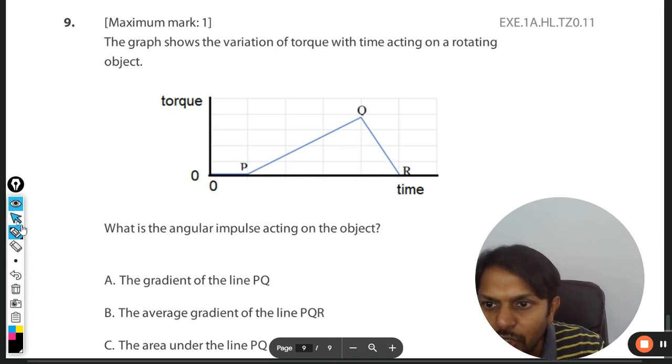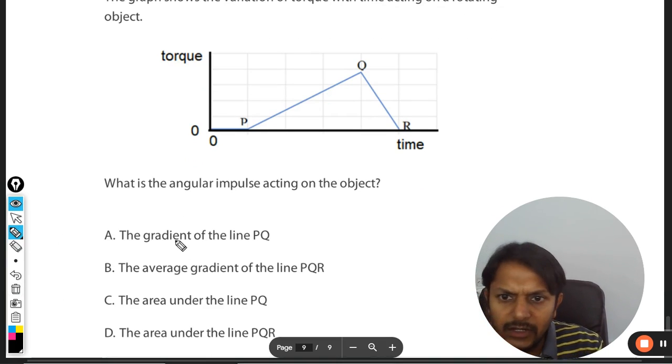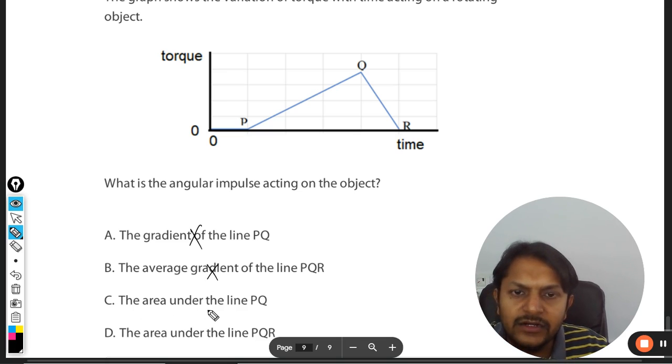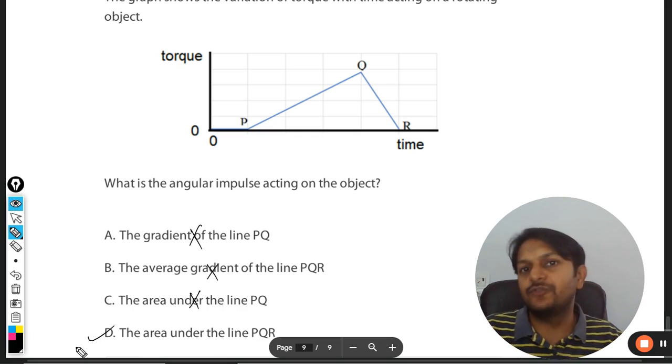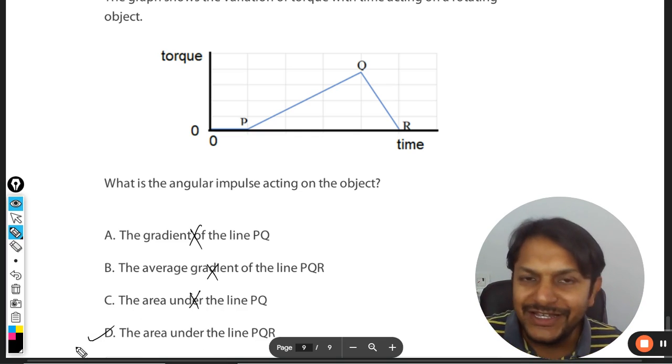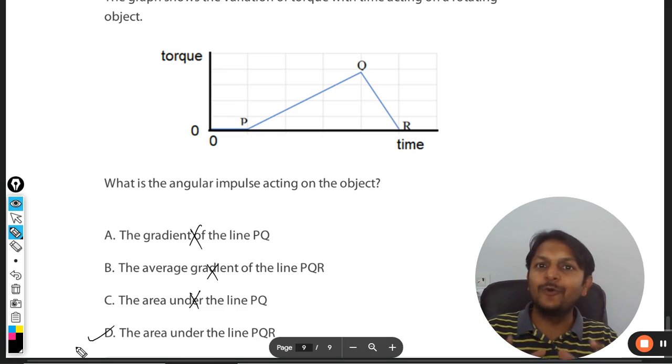Let us see what are the options. The gradient of the line PQ, the average gradient, area under the line PQ, no. Area under the line PQR. Complete area we have to take and that will be the total impulse. So this is how we do this question.